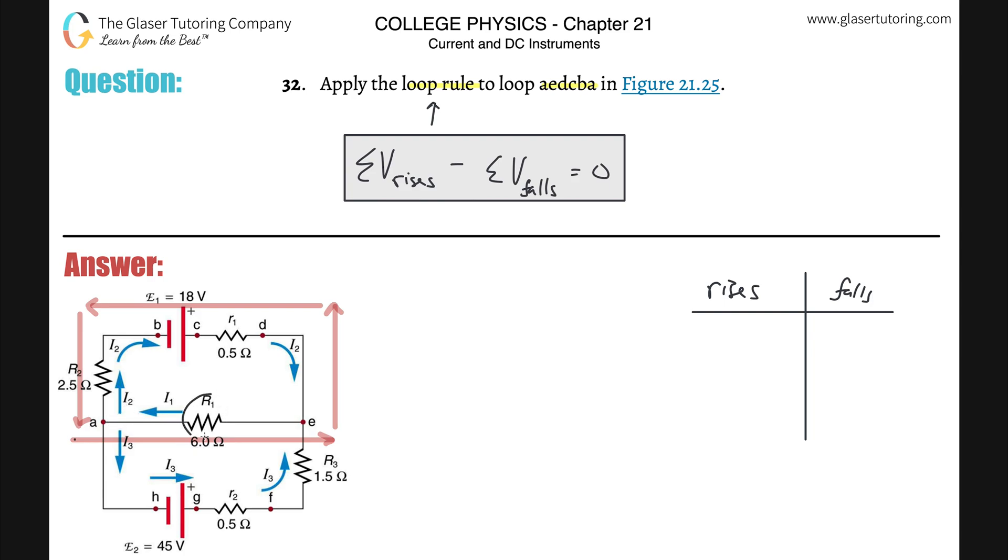So once you get to a resistor, you have to say, oops, stop. Something's going to happen to the potential. Either the potential is going to rise or the potential is going to fall. Now, here's what you need to remember.